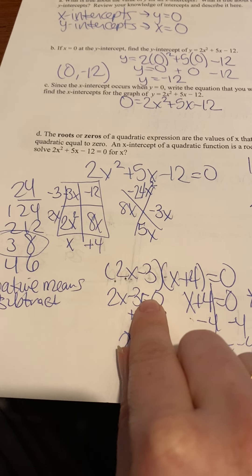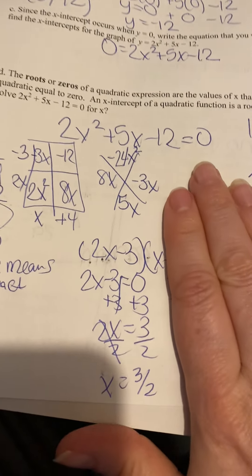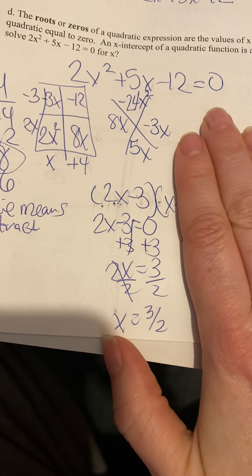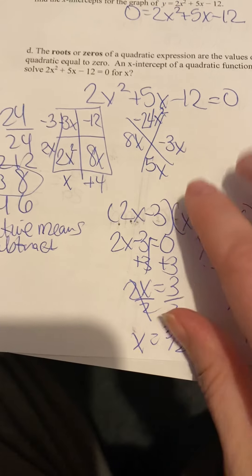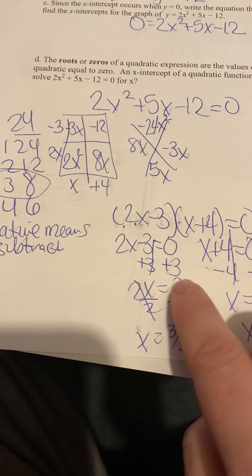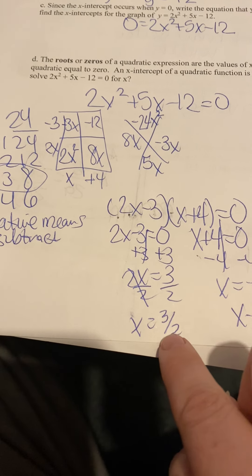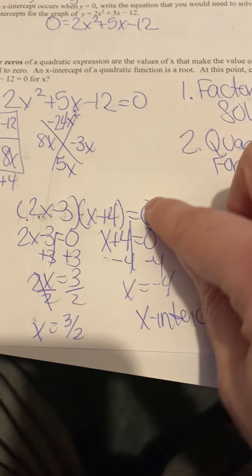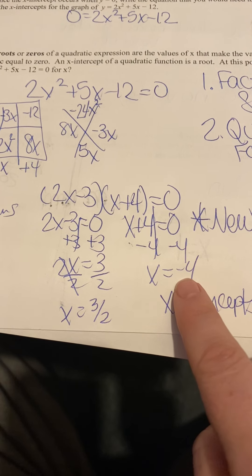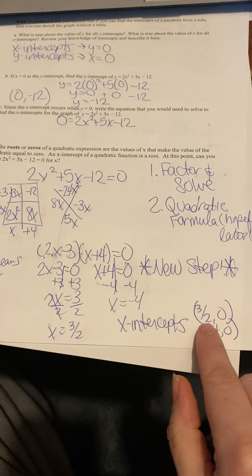So, 2x minus 3 equals 0, or x plus 4 equals 0. So then you can solve these two itty-bitty little equations. I showed all my work. If you can solve it without showing all the work, that would be fine with me right now. So add 3 to both sides. Then you get 2x equals 3. So the opposite of times is divide. So x would be 3 over 2. Over here, x plus 4 equals 0. Probably you can just know that that's negative 4. But I showed that you subtract 4.